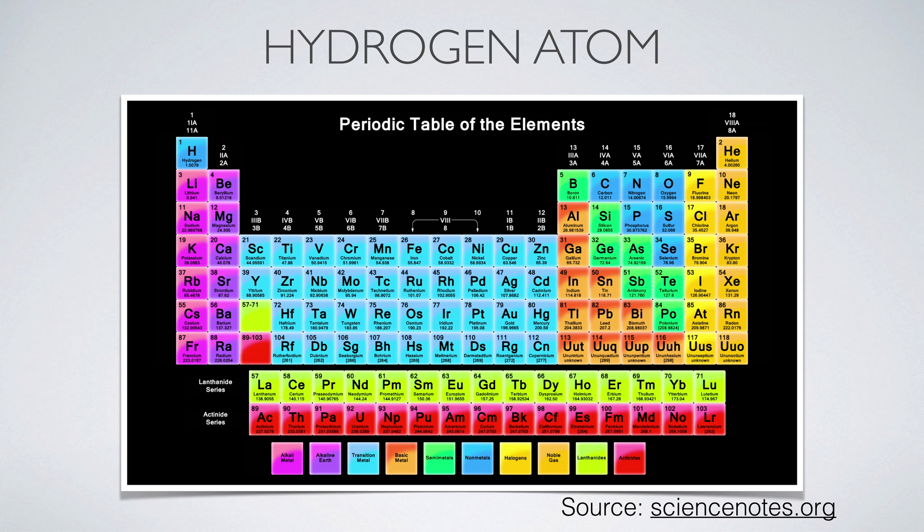The structure of the periodic system of elements in chemistry can be understood from a single operator which is the Hamiltonian of the hydrogen atom. By understanding its eigenvalues and eigenfunctions, one can deduce the inner structure of the atoms. For each of the eigenvalues 1 over n-squared, there are a set of eigenfunctions labeled by azimuthal quantum numbers.